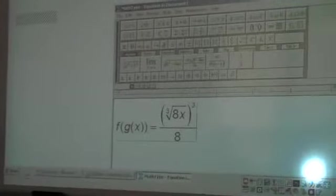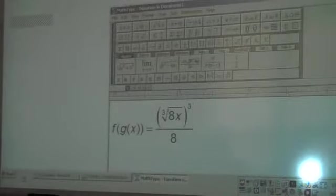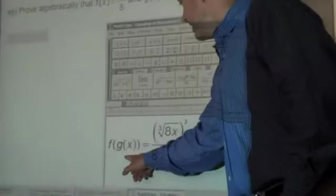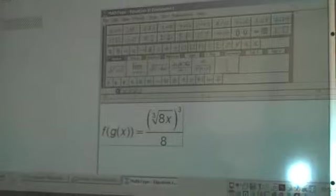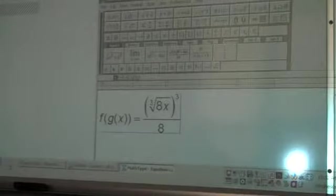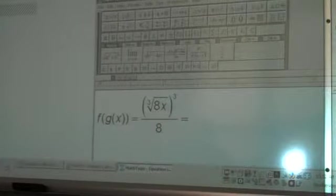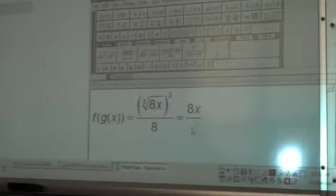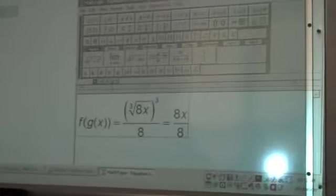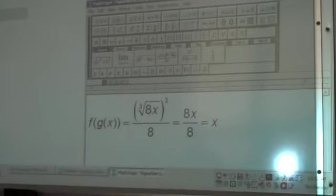And then I cube this. Okay, well first off, double check. Did I write this correctly for substituting g of x in the f of x? Everywhere there's an x? If I wrote it correctly in my head, yes. Cube roots and cubes tend to cancel each other out. So this becomes 8x over 8, which a couple of you already jumped ahead and said equals x.